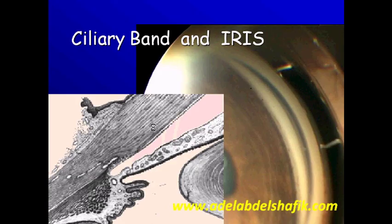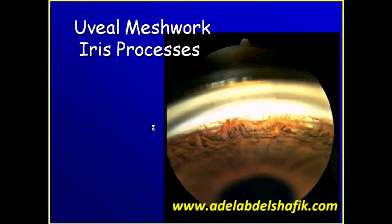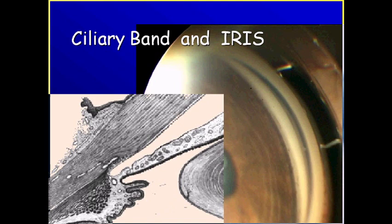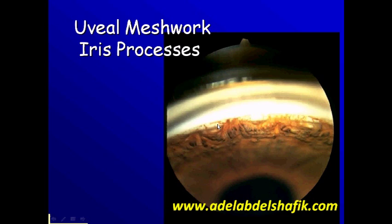The canal of Schlemm is usually not seen because it is embedded inside the trabecular meshwork. Then we can see the ciliary body region — we call this the ciliary recess. The gray pigmented part is the trabecular meshwork, the light brown is the iris, and the dark brown is the ciliary body. The anterior surface of the ciliary body is called the ciliary recess. These fine pigmented bands are the iris processes, which are the uveal part of the trabecular meshwork.